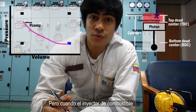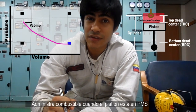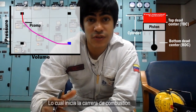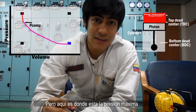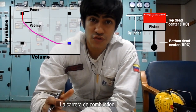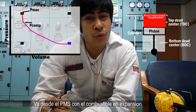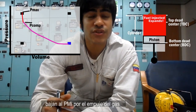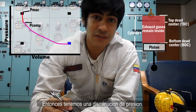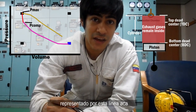However, when the fuel injector puts fuel — so the fuel valve is open — when the piston is in top dead center, the expansion of this fuel occurs, which starts the combustion stroke. But at this point, it's the maximum pressure point, when the fuel is injected and starts to expand. The combustion stroke is when the piston goes from top dead center, and the fuel, expanding, pushes the piston down to bottom dead center. So we have a decrease of pressure and also an increase of volume — this is this line right here.